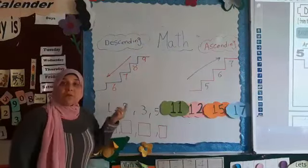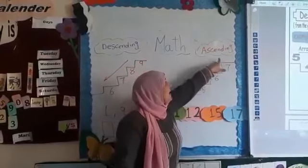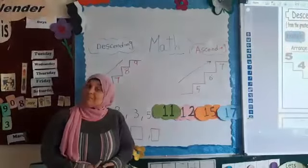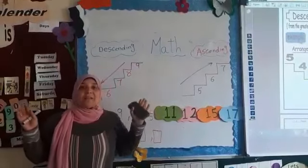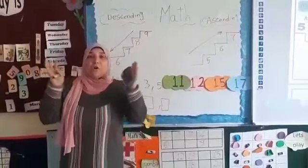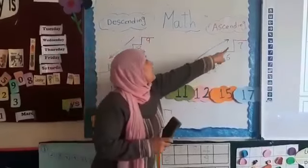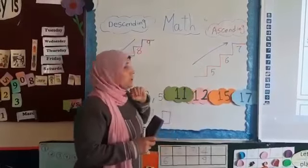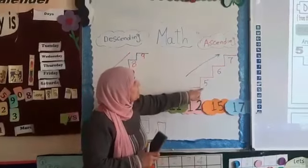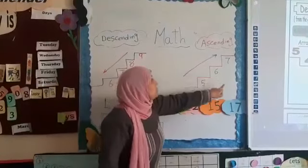Do you remember what we talked about last session? We took ascending. Do you remember what we said about ascending? Yes, excellent. When we do ascending, we start from smallest. What is this? This is a stairs. When we do ascending on the stairs, what do we do KG2? Go up — from the smallest to the biggest.